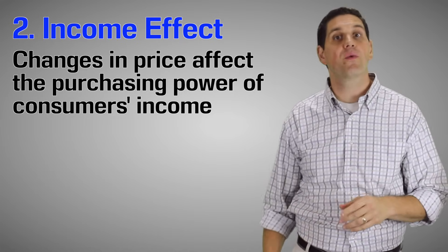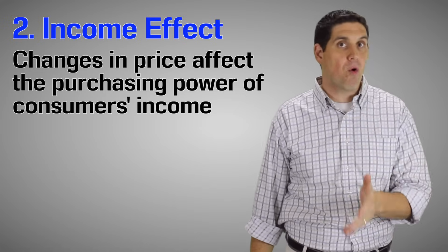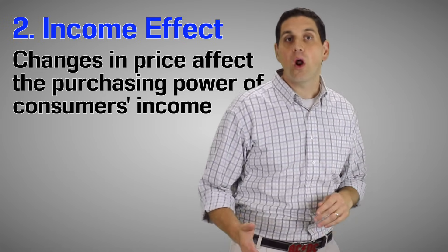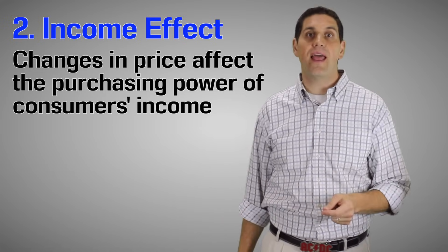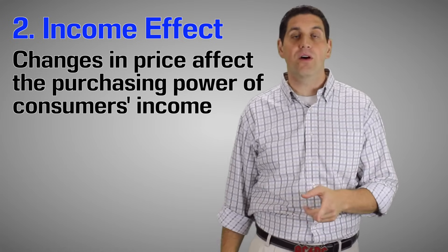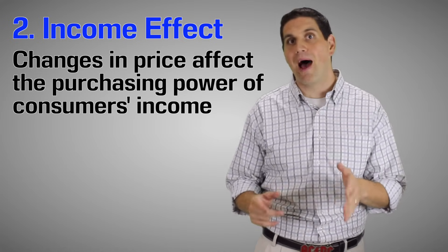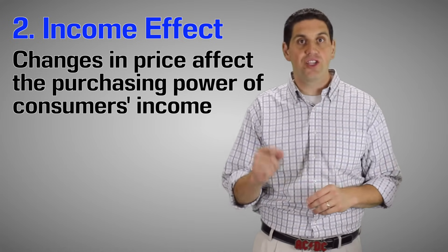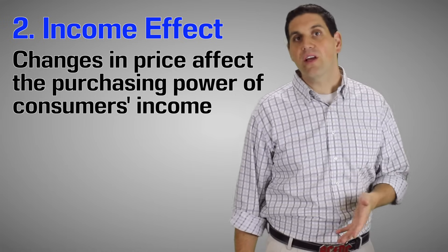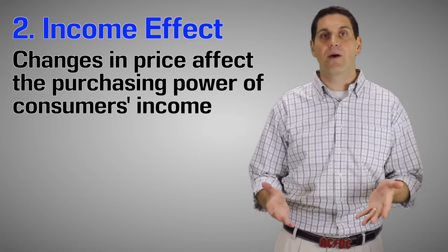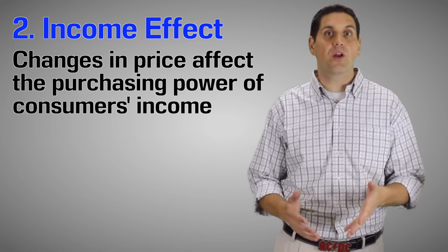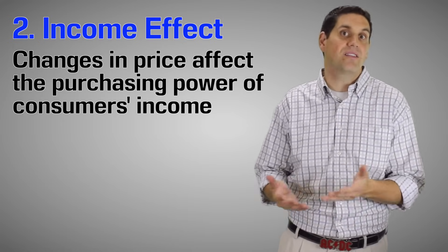Now the income effect says that when the price goes down, people buy more milk because their purchasing power has increased. So if you go to the store and you find out that milk is on sale and only costs $1 for a gallon of milk, you're going to buy more because you can buy more. The amount you can buy with each dollar has increased. And of course it goes the other way. If the price goes up for milk, people are going to stop buying milk because their purchasing power has decreased. Each dollar gets them less milk.